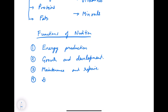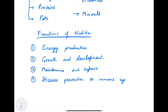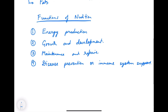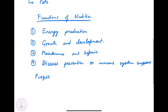The fourth function is disease prevention and immune system support. If we want to prevent disease, we need proper nutrition. To build a strong immune system, we need food and nutrition in the proper amount and proper proportions.